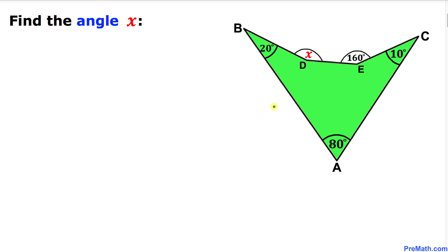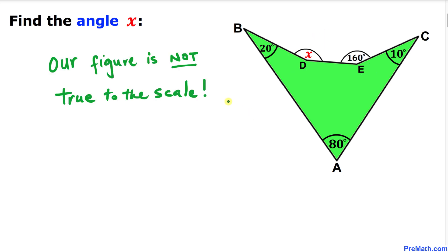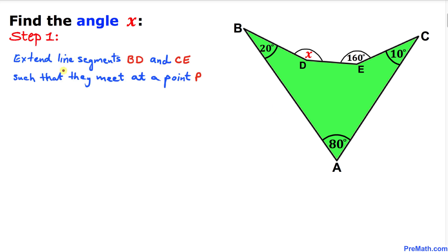Welcome to Pre-Math. In this video tutorial we have got this irregular polygon as you can see in this figure, along with these vertices A, B, C, D, and E. The angles given to us are 80 degrees, 20 degrees, 10 degrees, and 160 degrees, and we are going to calculate the angle x. Note that the given figure is not 100 percent true to scale.